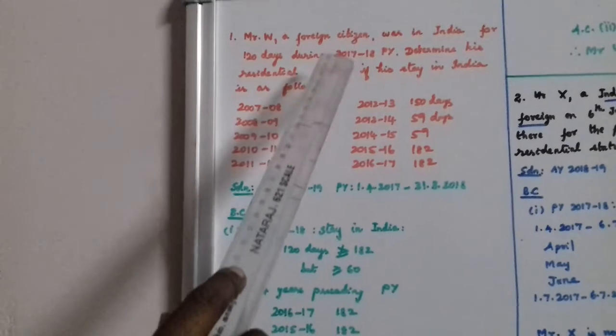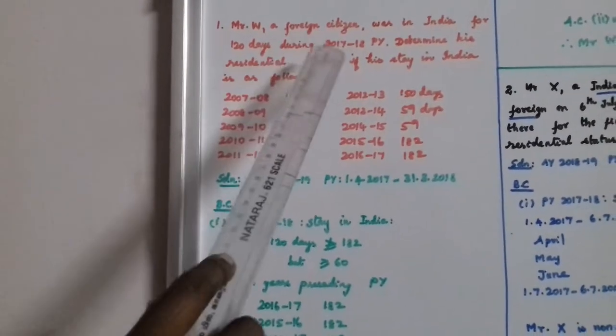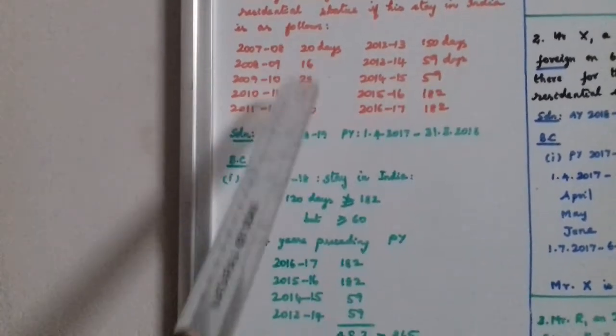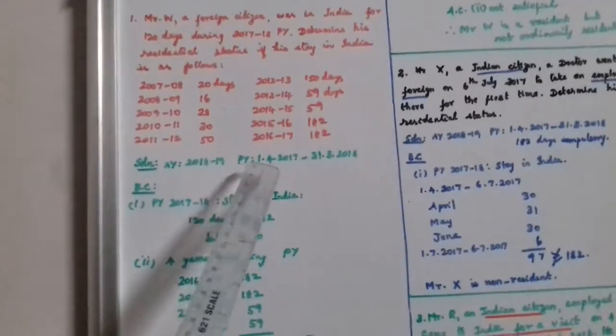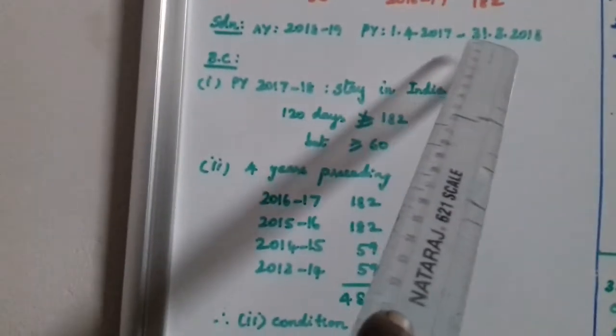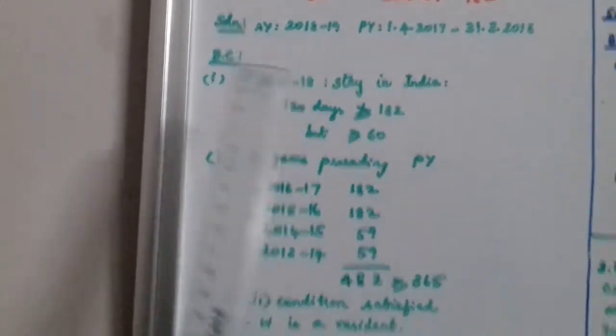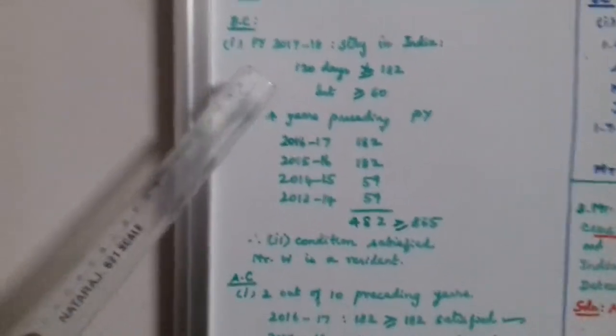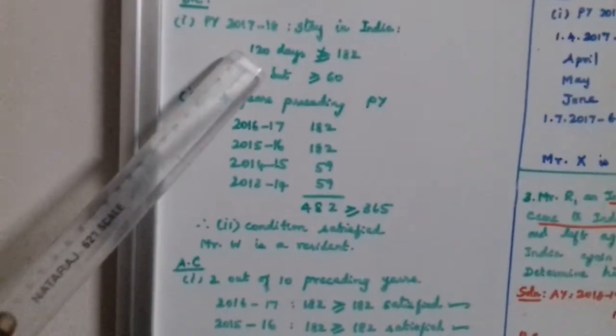Mr. W, a foreign citizen, was in India in the 2017-18 previous year for 120 days. The residential status is determined for the assessment year 2018-19. We check the basic conditions: first condition — previous year 2017-18, stay in India.